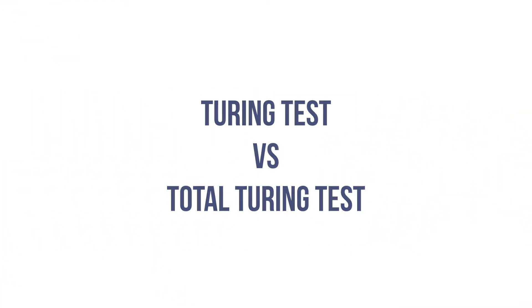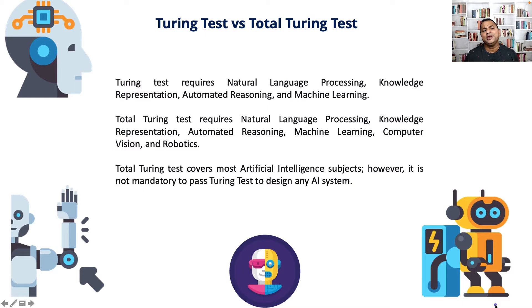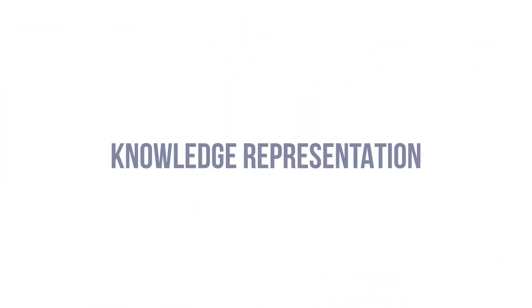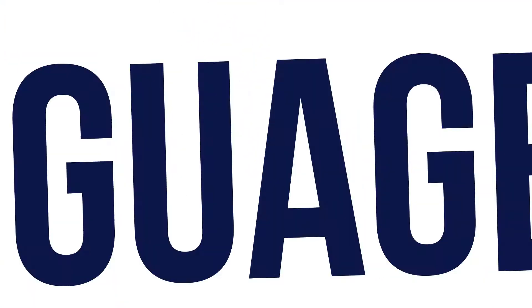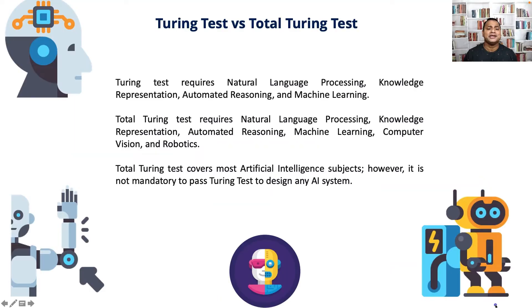The computer fools the interrogator about 30% of the time. Turing test versus Total Turing test: the Turing test requires natural language processing, knowledge representation, automated reasoning, and machine learning. The Total Turing test requires natural language processing, knowledge reasoning, automated reasoning, machine learning, computer vision, and robotics. The Total Turing test covers most of artificial intelligence subjects.